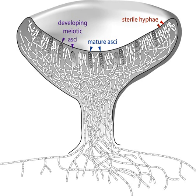Pseudothecium: this is similar to a perithecium, but the ASCI are not regularly organized into a hymenium and they are bitunicate, having a double wall that expands when it takes up water and shoots the enclosed spores out suddenly to disperse them. Example species are Apple Scab (Venturia inaequalis) and the Horse Chestnut disease Guignardia aesculi.